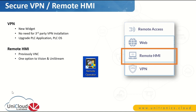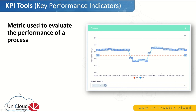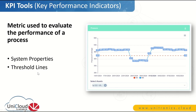Let's move to the new functionality related to KPI tools. KPI is Key Performance Indicator — a metric used to evaluate the performance of a process. For example, if you're benchmarking the daily water throughput — how much clean water you are producing from source water — and your benchmark is 1,000 liters a day, that is how you want to benchmark your performance. In the area of KPI tools, we have system properties that were introduced before, and a new tool at the widget level: threshold lines. Let's recap on system properties — what they are and why we need to use them.